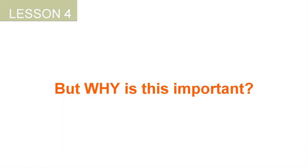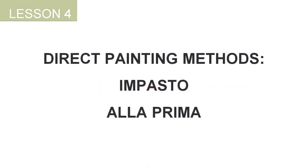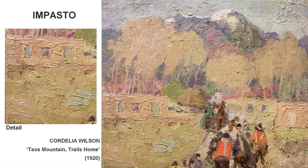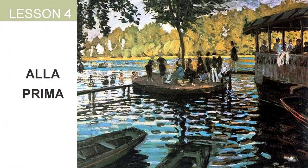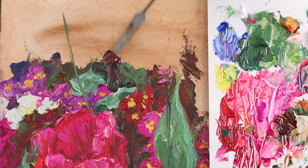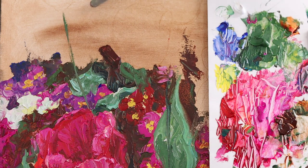Their undertone will appear lighter and more intense than their mass tone. But why is this so important? When we apply paint on a canvas, we rely on what its mass tone or undertone will be like. For example, painting methods like impasto and a la prima are based on the paint's mass tone. So colors are applied thickly, either using a palette knife or a brush, and the colors are seen on the mass tone — like ultramarine blue, for example.